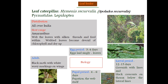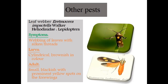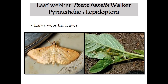These are the important pests of Amaranthus. Coming to other or minor pests causing damage in Amaranthus. First one is leaf webber, Erionota thrax impactella, Family Hesperiidae, Order Lepidoptera. Symptom is webbing of leaves with silken threads; larvae are cylindrical, brownish in color. The adult has a prominent tail spot on the forewings. Next one is another leaf webber, Sylepta basalis, Family Pyralidae, Order Lepidoptera. You can see the webbed portion of leaves caused by the leaf webber.